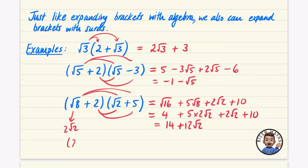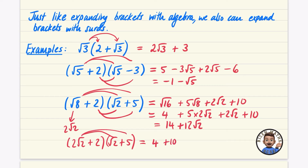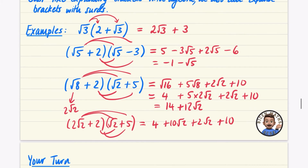If you had simplified root eight to two root two first, you'd get something slightly different in the working but the same final answer. Two root two times root two is two times root two times root two, which is two times two — that's four. This immediately gives you ten root two, two root two, and ten from the last part, saving the simplifying step at the end. It's up to you which approach you prefer.